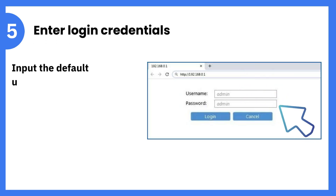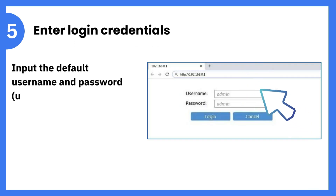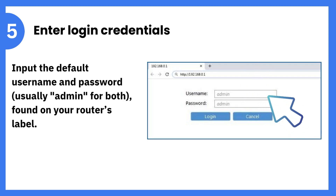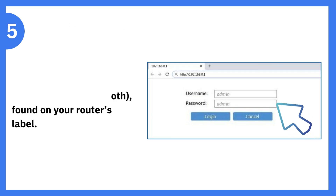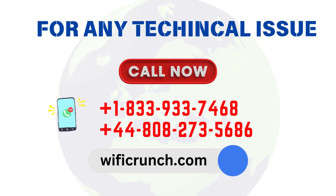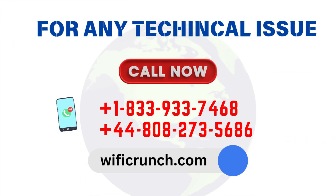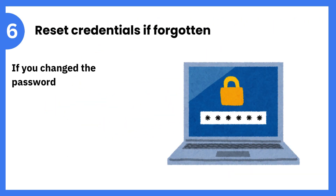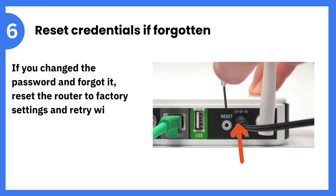Step 5: Enter login credentials. Input the default username and password — usually 'admin' for both — found on your router's label. Step 6: Reset credentials if forgotten. If you changed the password and forgot it, reset the router to factory settings and re-try with default credentials.